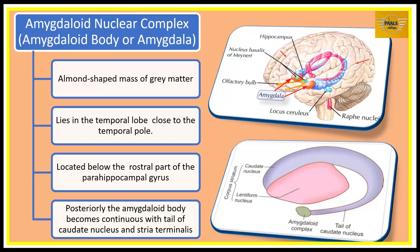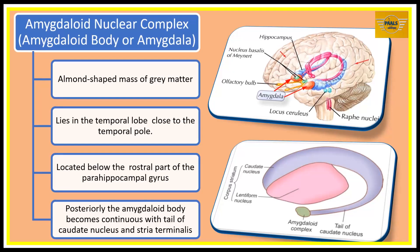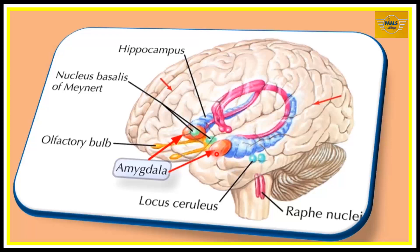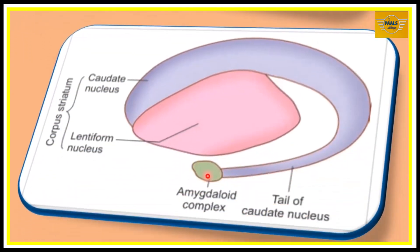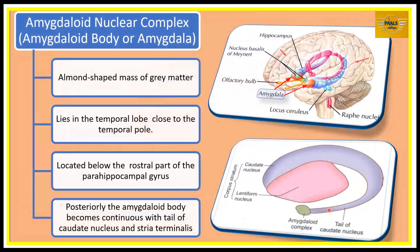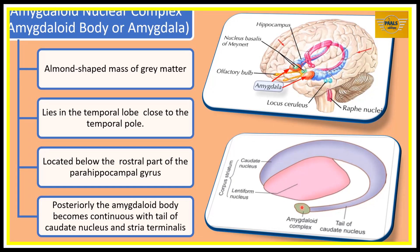In this lecture we'll be considering all the subcortical regions of the limbic system, and we're going to start with the amygdaloid nuclear complex, also called the amygdaloid body or simply amygdala. The amygdala is a very tiny but very active structure. It is one of the subcortical components of the limbic system and one of the cells seen in the basal ganglia. It is almond-shaped and lies in the temporal lobe close to the temporal pole.